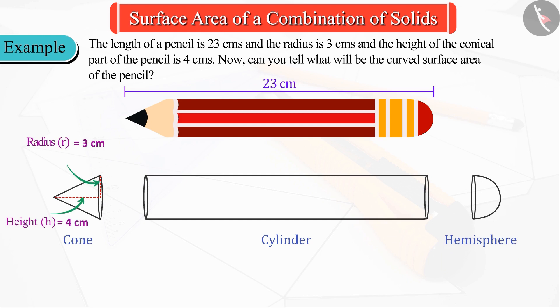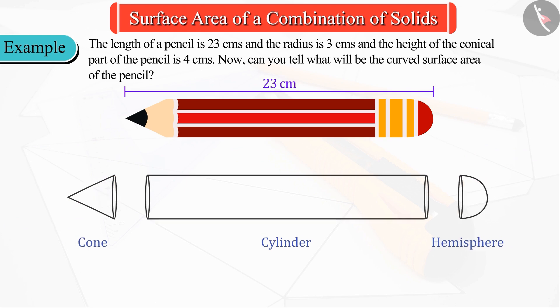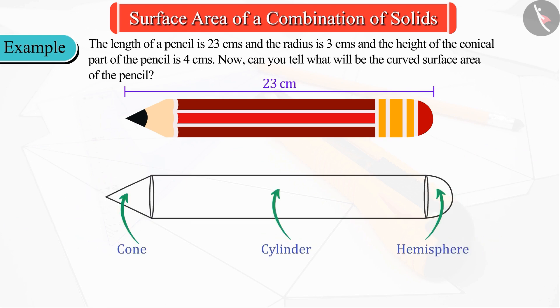The height of the conical part of the pencil is 4 centimeters, radius is 3 centimeters, the length of the cylinder is 16 centimeters, and the radius of the hemisphere is 3 centimeters. Thus we can say that this entire figure is made up of a combination of three figures.